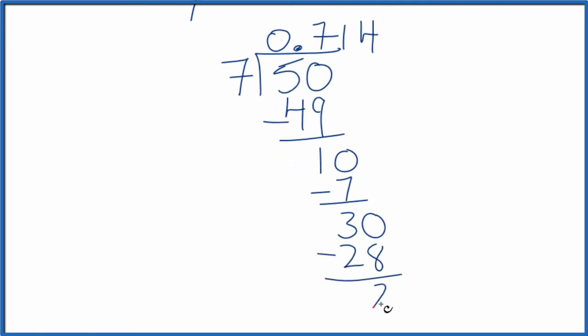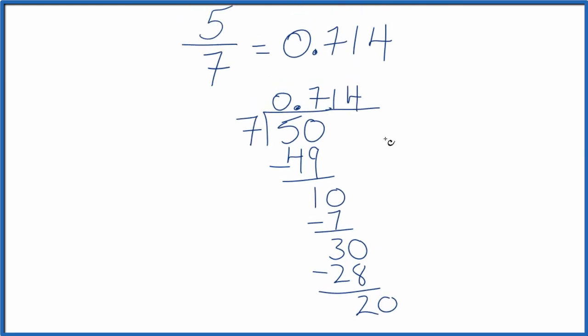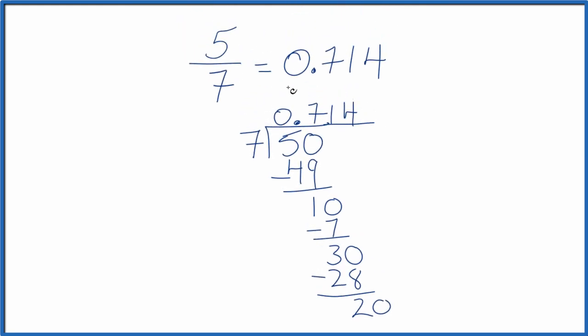4 times 7 that's 28. We have 2 left over and you can see we can just keep going here for some time. We'll stop at 0.714. So in answer to our question 5 sevenths the fraction equals the decimal 0.714 but this number does keep going. So this is not exactly equal. It's very close. You can add more decimal places if your teacher requires that.